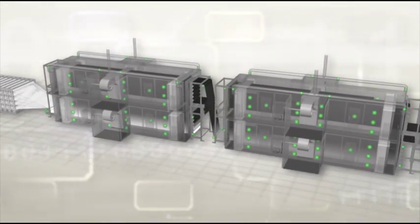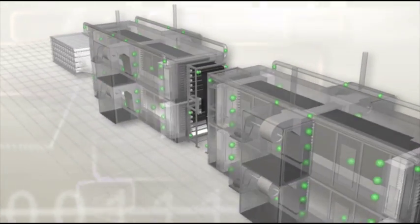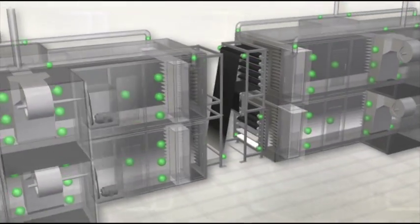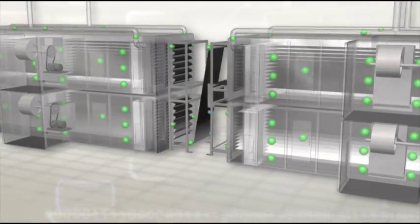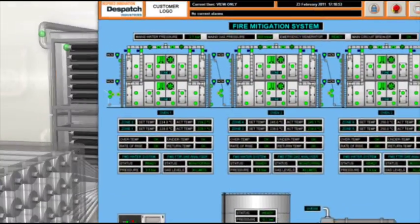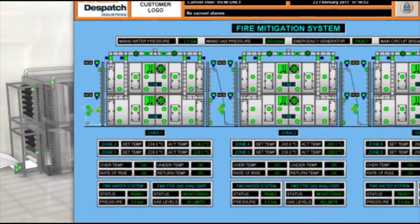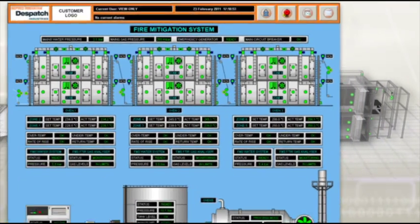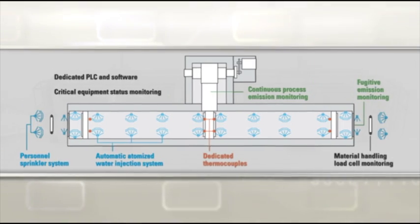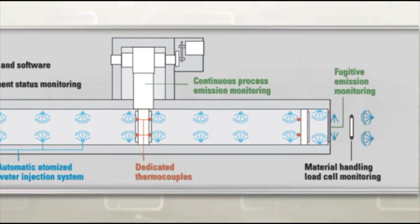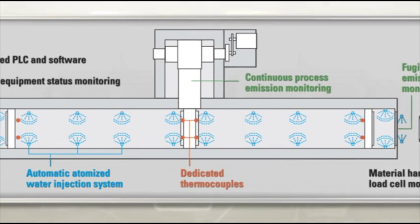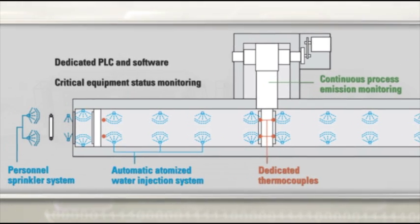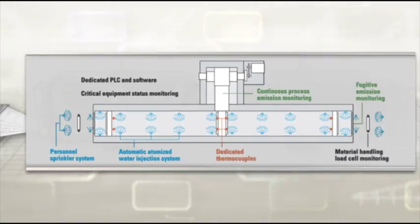Despatch has also recently introduced a new fire mitigation system, a control system that reduces the likelihood of fire occurring in the process chamber. This optional package consists of a series of sensors and monitors that are connected to a dedicated PLC and software system. If deviations from the programmed process parameters occur in the process chamber, the FMS engages an automatic shutoff of all non-essential systems and, if necessary, turns on a controlled atomized water suppression system.